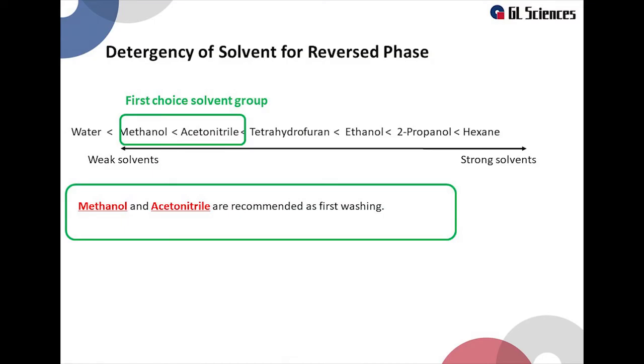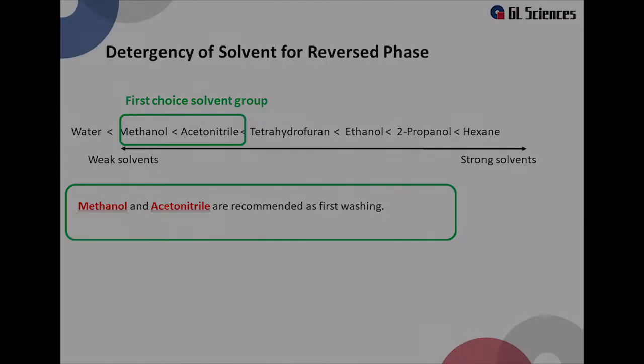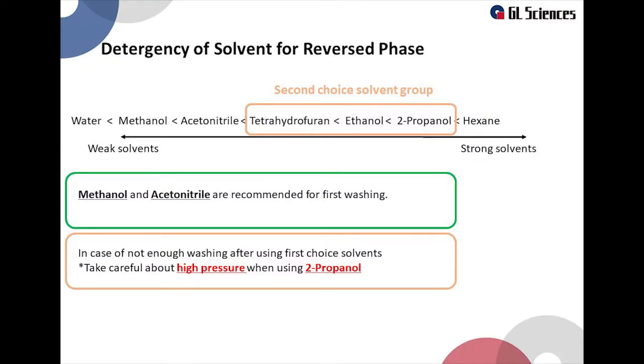We would recommend to start washing with either methanol or acetonitrile. They can easily be mixed with water. If the cleaning is insufficient with methanol or acetonitrile, increase the strength of the detergent for the second washing method. It is better to use tetrahydrofuran, ethanol, or isopropanol. These solvents have a stronger detergency.